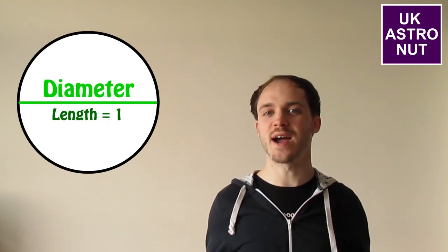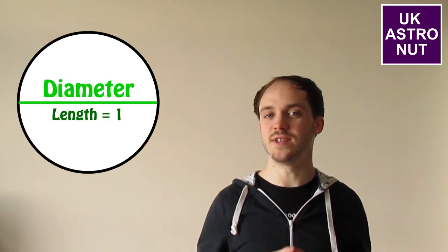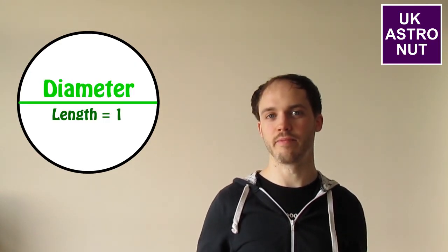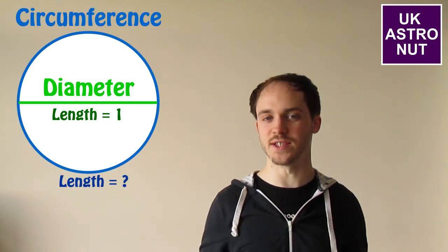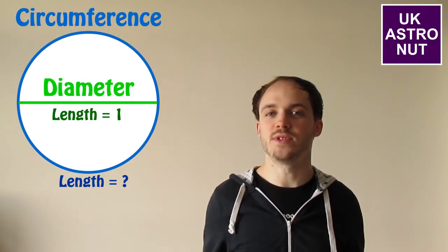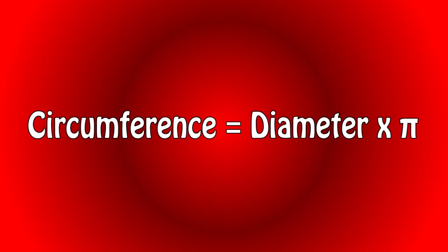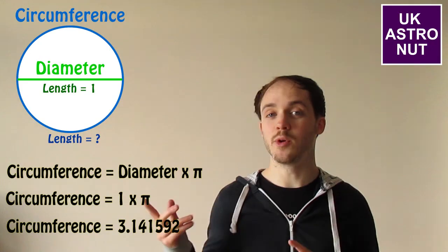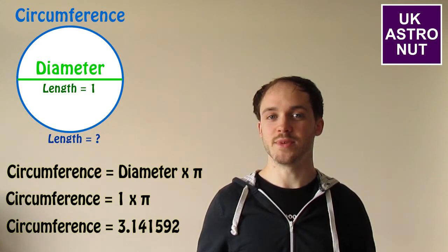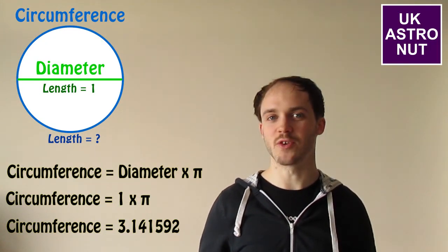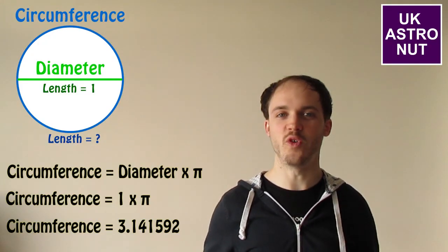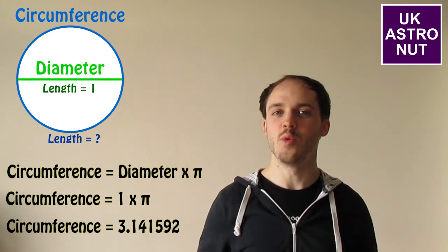Now let's look at an example. Here we have a circle. This circle has a diameter of 1 — the diameter is the distance across the circle. Now let's say we want to work out the circumference, the distance around the outside of the circle. To do this we use the simple equation that the circumference of a circle equals the diameter multiplied by pi. We have the diameter of 1 and we multiply by pi, so the circumference equals 3.141592 and so on — which is equal to pi.